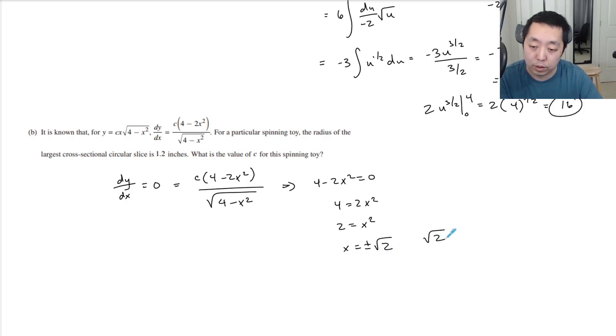Now they're saying the largest cross-sectional circular slice has radius 1.2 inches. So we plug that back into y. Remember, y equals the radius of the cross-section, the height of my little rectangle. So 1.2 = c·√2·√(4-(√2)²).